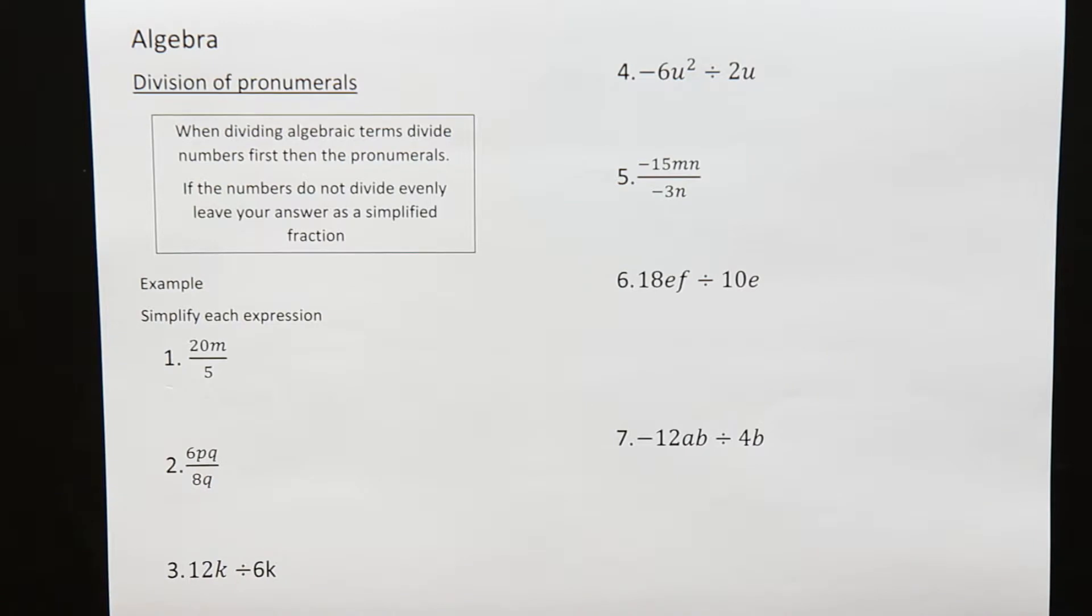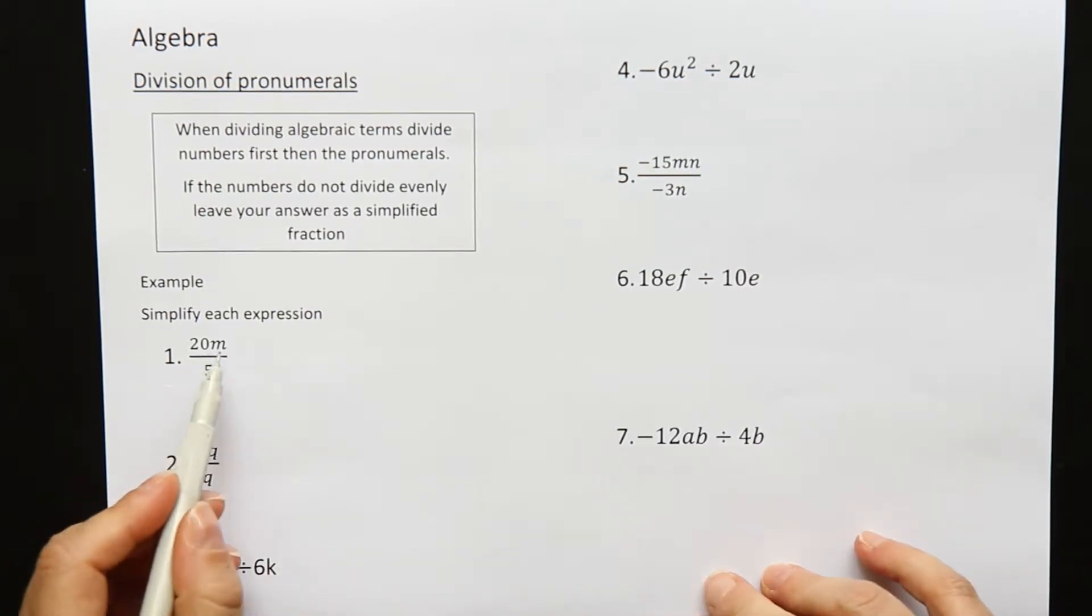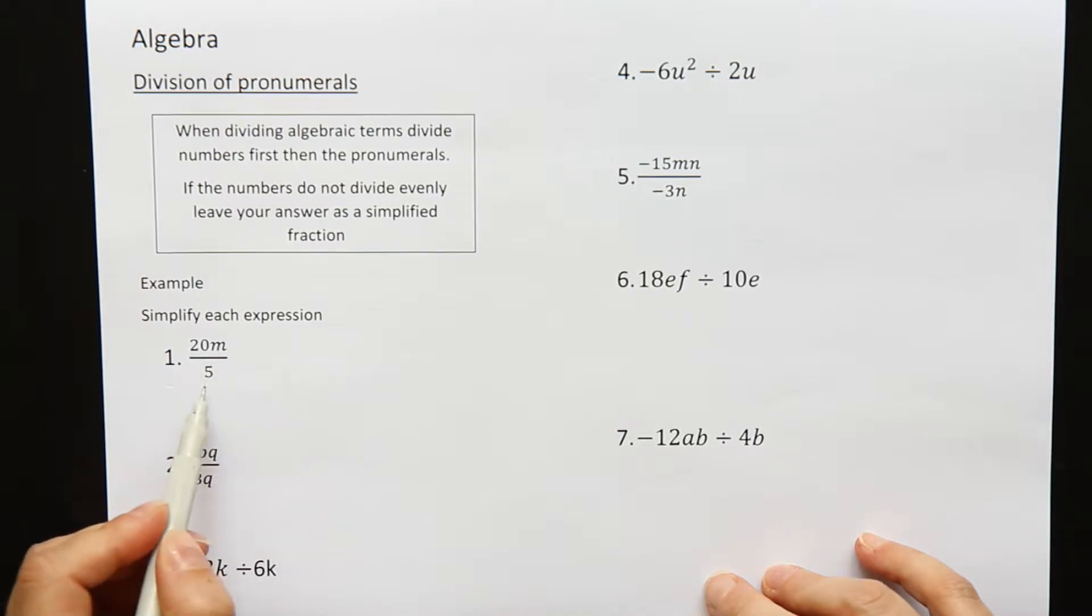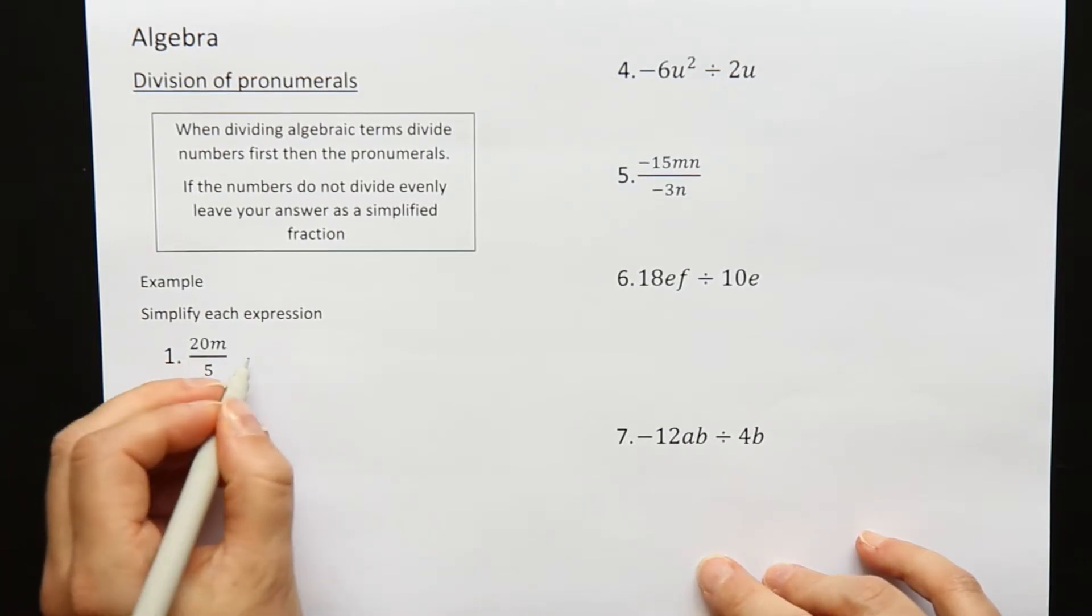Question one. Let's simplify these expressions here. We have 20m divided by 5. A fraction is just another way of writing divide. So I have to divide the numbers. 20 divided by 5, that goes nicely. 20 divided by 5 is 4.